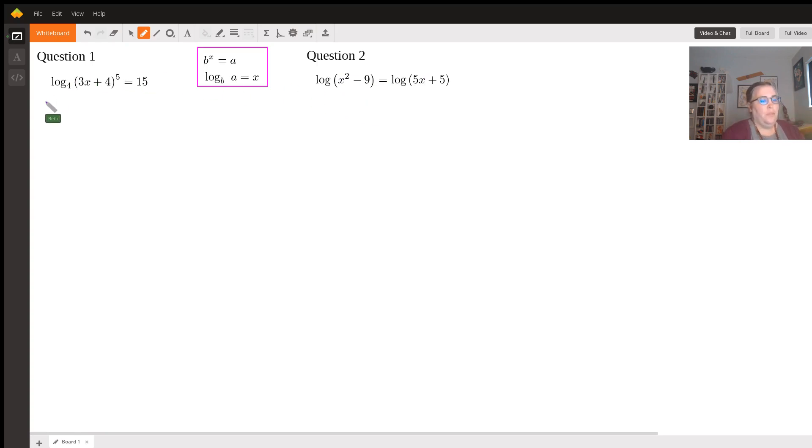So let's look at question one. The first thing we want to do is deal with this exponent. If you remember the exponent rule, you can pull it out and multiply the whole logarithm times that 5. So we get 5 times the logarithm base 4 of (3x + 4) equals 15. We divide both sides by 5 and get logarithm base 4 of (3x + 4) equals 3.